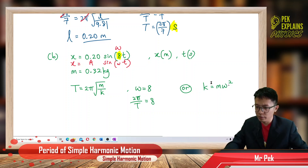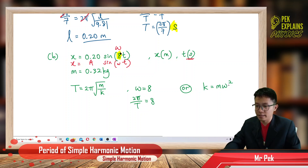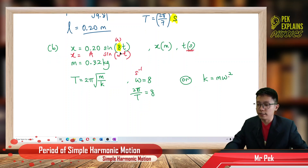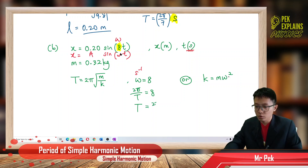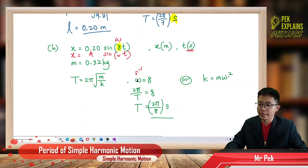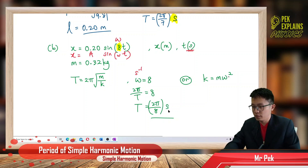Since time is in seconds, omega is in per second — already in SI unit. My period = 2π/8 seconds. The unit is seconds because omega is per second, so the period is in seconds.